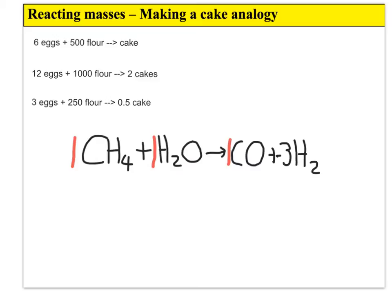So these numbers are just ratios. Like in our cake analogy, it took six eggs and 500 flour to make one cake. So the ratio was six to 500 to one. The ratio in this reaction is one methane to one water to one carbon dioxide to three hydrogens. I've drawn the ratio up here again - it's one to one to one to three.